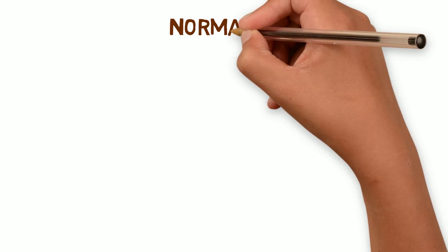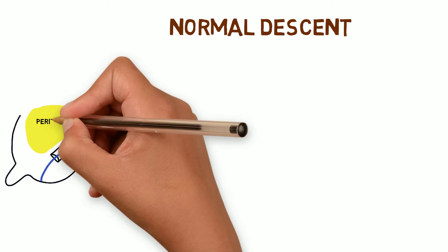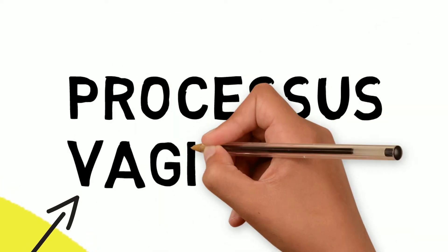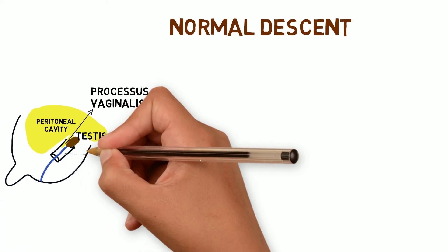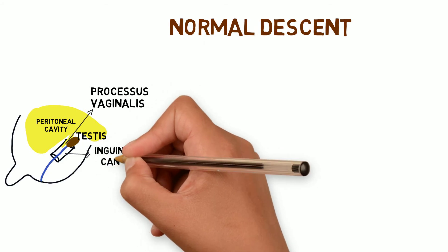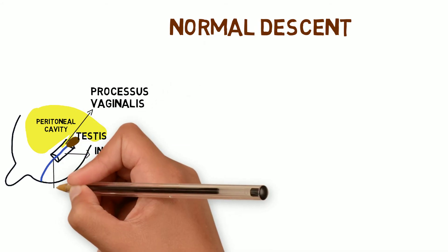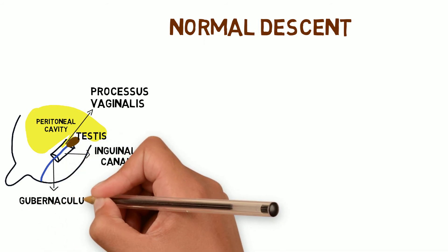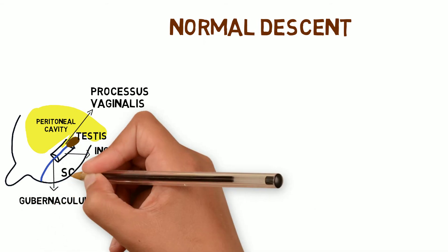What is the normal descent? In intrauterine life by 3 months of age, the testis is anchored at the internal inguinal ring. This is the peritoneal cavity and the evagination is processus vaginalis, on which the testis glides in the inguinal canal. The gubernaculum testis distends the inguinal canal and guides the testis into the scrotum.